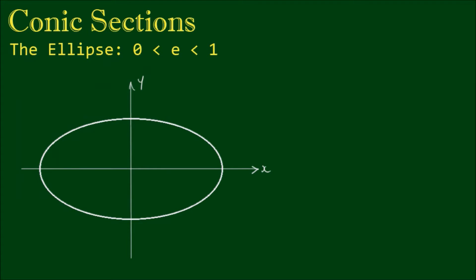Here I have an ellipse centered about the origin, and we've established that the standard form of the equation of this ellipse is x squared on a squared plus y squared on b squared is equal to 1. In this video, let's explore all of the features of the ellipse and determine some relationships for these features before we go on to worked example problems.